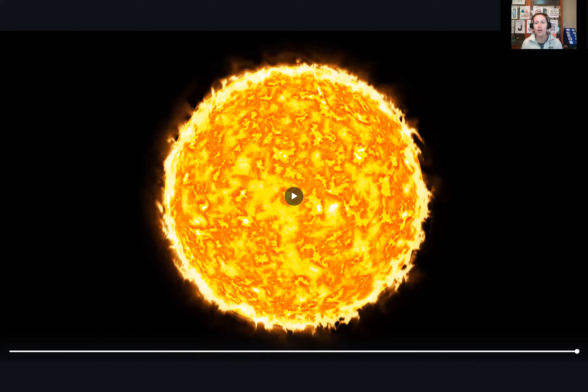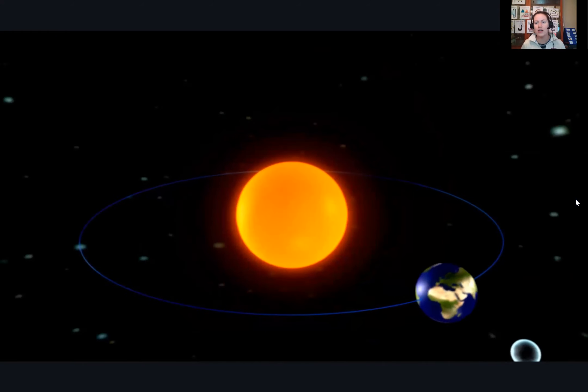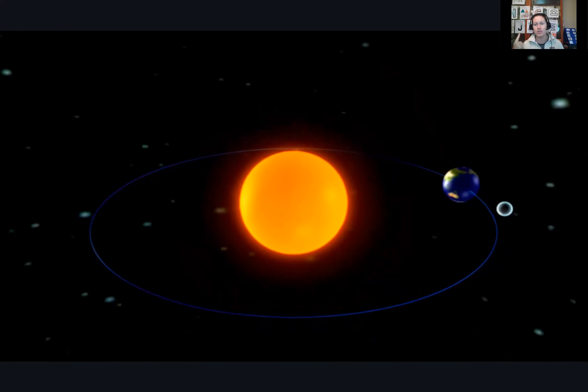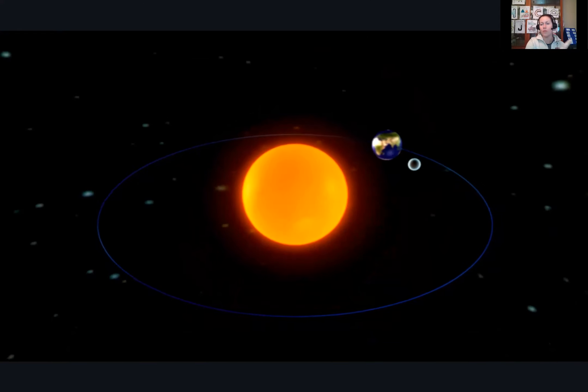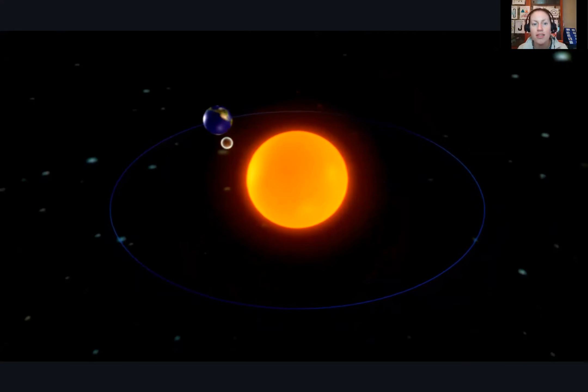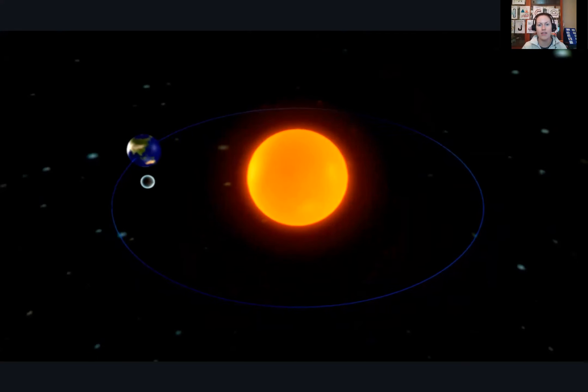That rotation where earth's spinning around itself is what gives us our night and day. Aside from that rotation, we also revolve around the sun. We make a big circle once a year. It takes a year to get all the way around the sun, and that's part of what gives us our seasons.